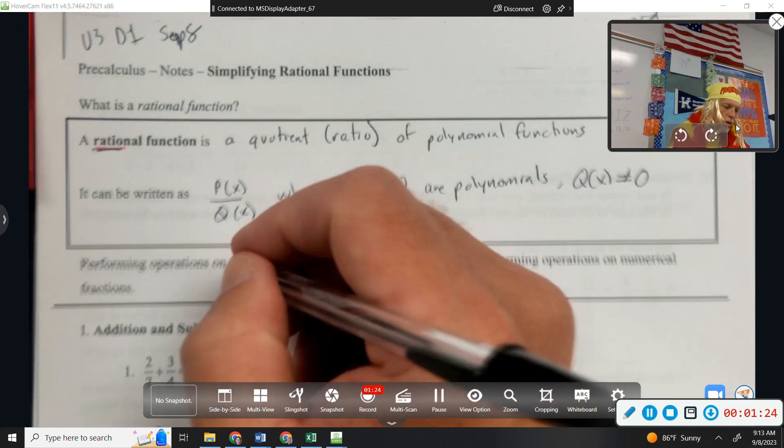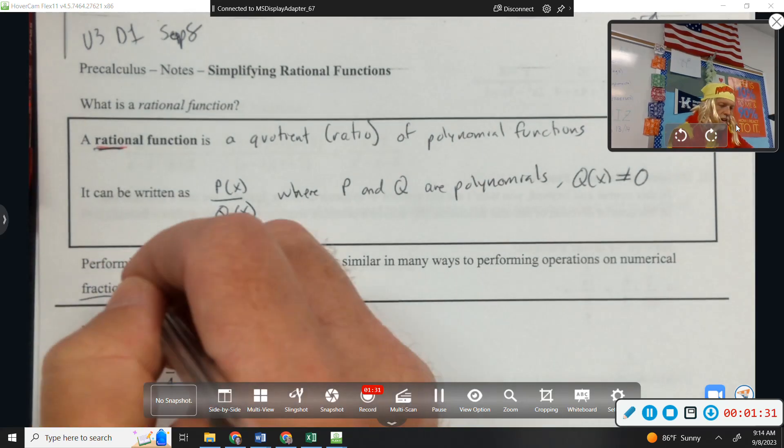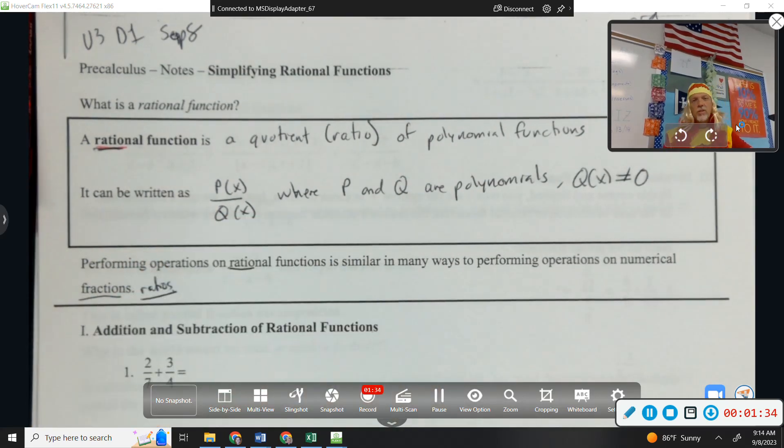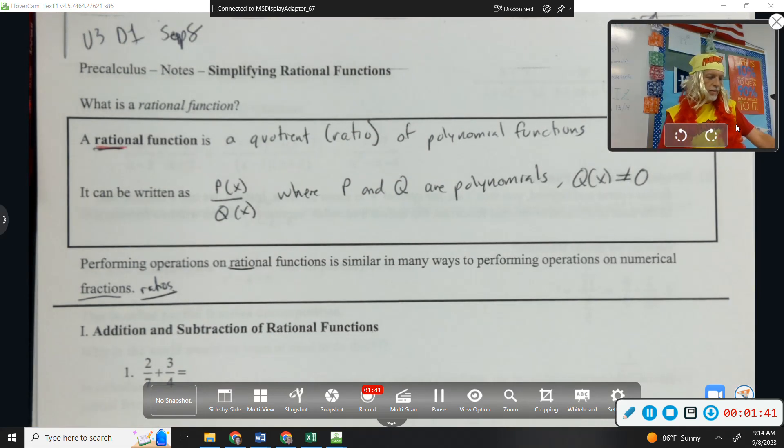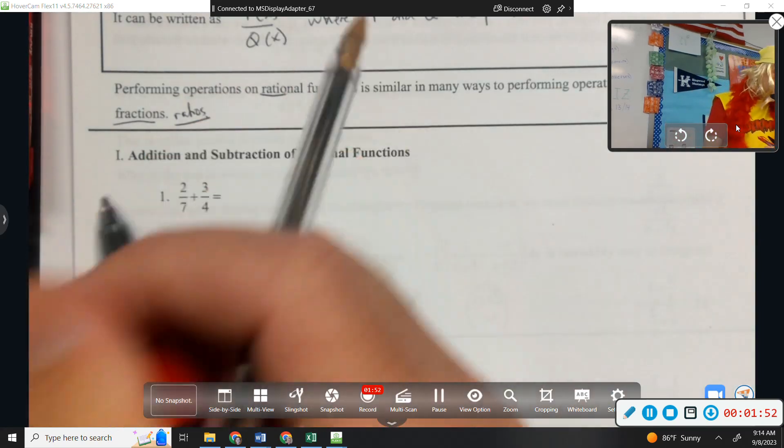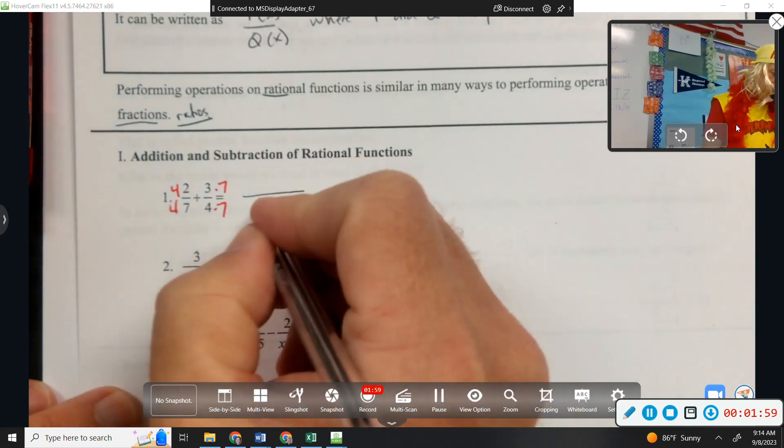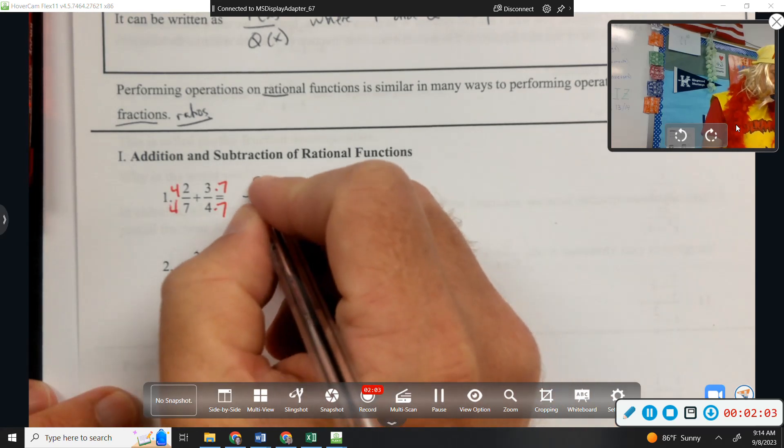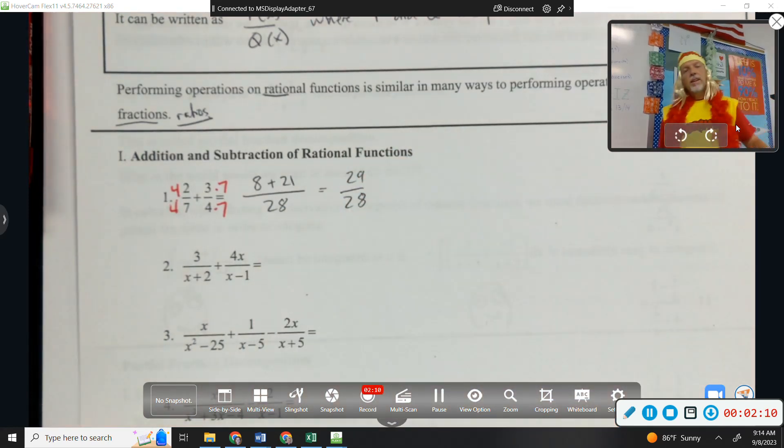Performing operations on rational functions is similar in many ways to performing operations on numerical fractions. So like ratios, whether it's numbers or fractions or variables, it's kind of the same process. So we get a little bit of review here. Two-sevenths plus three-fourths. What does it take to add fractions? What do we need? Common denominator. So first fraction needs a four, second fraction needs a seven. So 28 in the bottom. Eight plus 21 in the top would be 29 over 28. Yeah, great work. What is that? Sixth grade, seventh grade, eighth grade, somewhere in there, adding fractions.